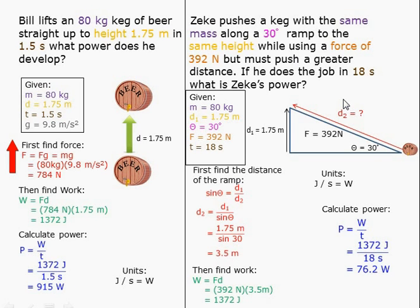Zeke pushes a keg with the same mass along a 30 degree ramp to the same height while using a force of 392 newtons, but must push a greater distance. If he does the job in 18 seconds, what is Zeke's power?